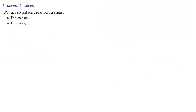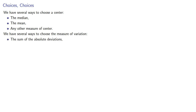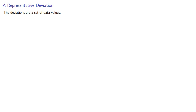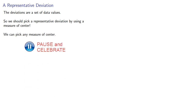It should be clear that we have several ways to choose a center — the median, the mean, or any other measure of center. We also have several ways to choose the measure of variation: the sum of the absolute deviations, the sum of the squared deviations, or other functions of the deviations. The deviations themselves are a set of data values, and rather than dealing with all of them individually, we should pick a representative deviation using some measure of center — and we usually choose the mean.